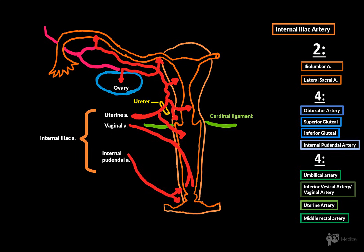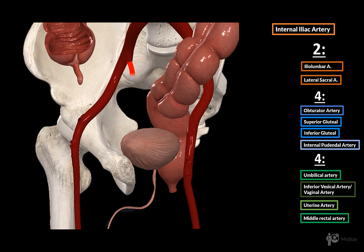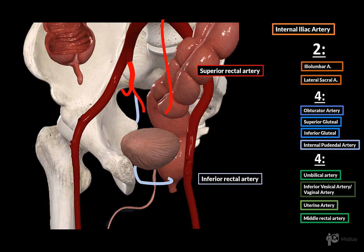The last artery is the middle rectal artery, which goes behind the vaginal canal. To cover the full blood supply of the rectum: the internal iliac artery gives off the internal pudendal artery, which branches off giving the inferior rectal artery. The superior rectal artery comes from the inferior mesenteric artery of the abdominal aorta. Then there's the middle rectal artery, which comes directly from the internal iliac artery, completing the whole blood supply to the rectum.